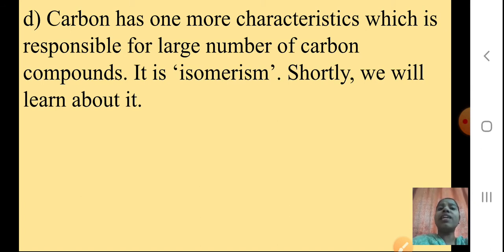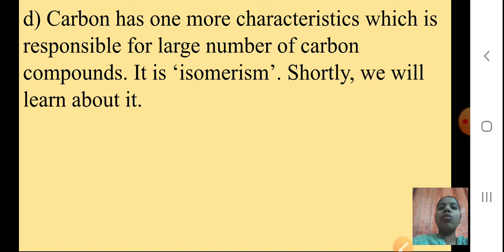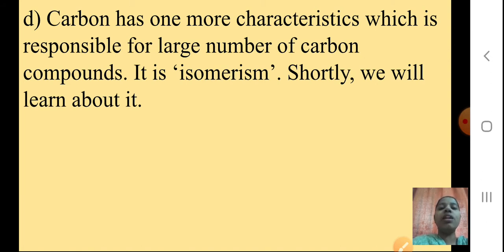I hope the four characteristics of Carbon are understood. First, you will remember catenation power. Second, Carbon forms many types of compounds. Third, as Carbon is tetravalent, with hydrogen and chlorine — two monovalent elements — we can form many Carbon compounds. And the fourth one to remember is isomerism.